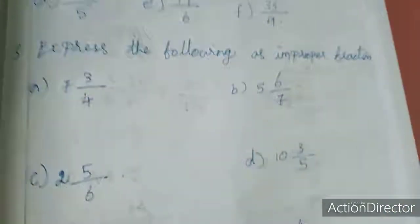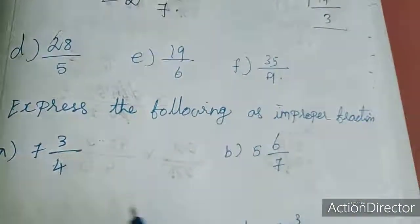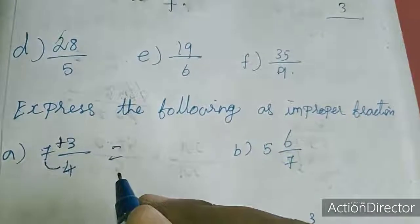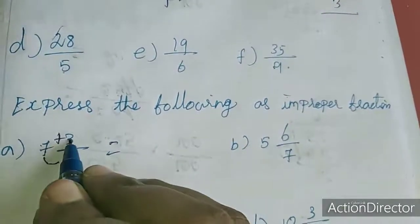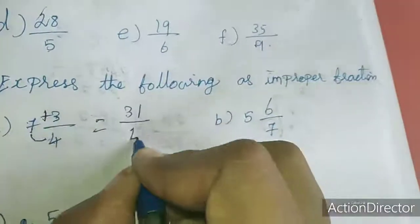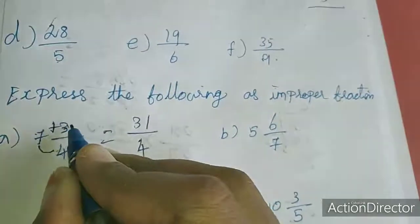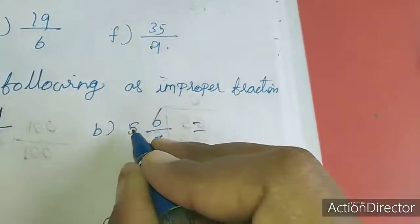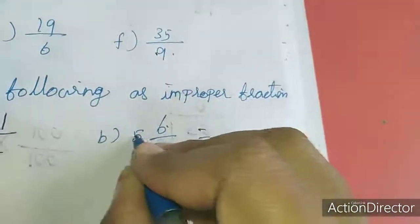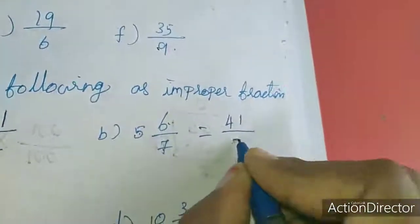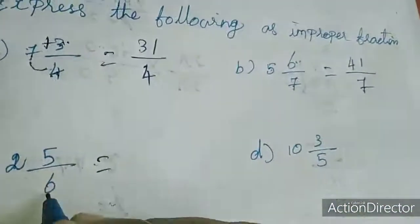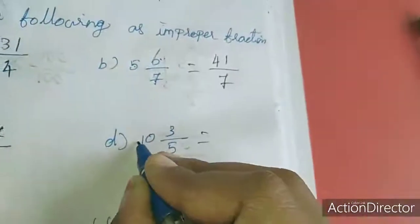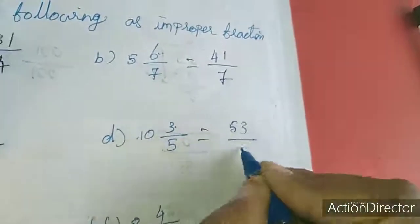Now moving to the third sum: express the following as improper fractions. 7 times 4 is 28, plus 3 is 31. So 31 divided by 4. Next: 7 times 5 is 35, plus 6 is 41 — so 41 by 5. Next: 6 times 2 is 12, plus 5 is 17 — so 17 by 6. Next: 10 times 5 is 50, plus 3 is 53 — so 53 by 5.